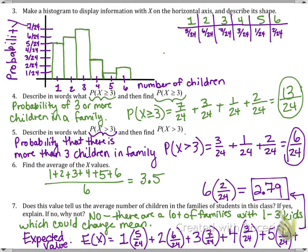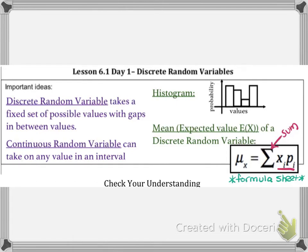Good work. Let's move on. Now we're going to talk about the big ideas here today. Today we talked about discrete random variables, and discrete random variables will only take on a fixed set of possible values with gaps in between those values. For our example with families, you could only have one or two or three or four children in the family. Then the continuous random variable is going to be able to take on any value in an interval, and that's what we'll spend the next video going over. If you are asked to make a histogram of your random variables, you are going to have the values on the x-axis and the probabilities go on the y-axis.